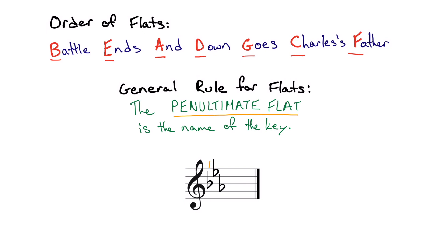Let's take this key signature as an example. The second to last flat here is E♭ — we know this for two reasons. Number one, it's on the E♭ space; if I put a note right there, that note would be E♭. We also know this because it is the second flat represented: we've got one, two, three flats from left to right, and the second flat is E♭. So if the penultimate flat is the name of the key, and the penultimate flat is E♭, then the name of the key must be E♭ major.